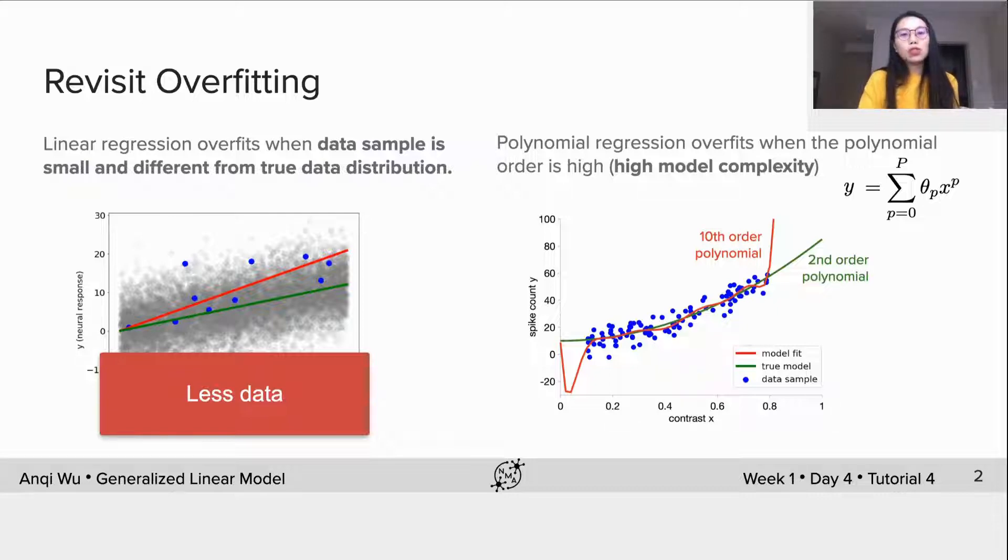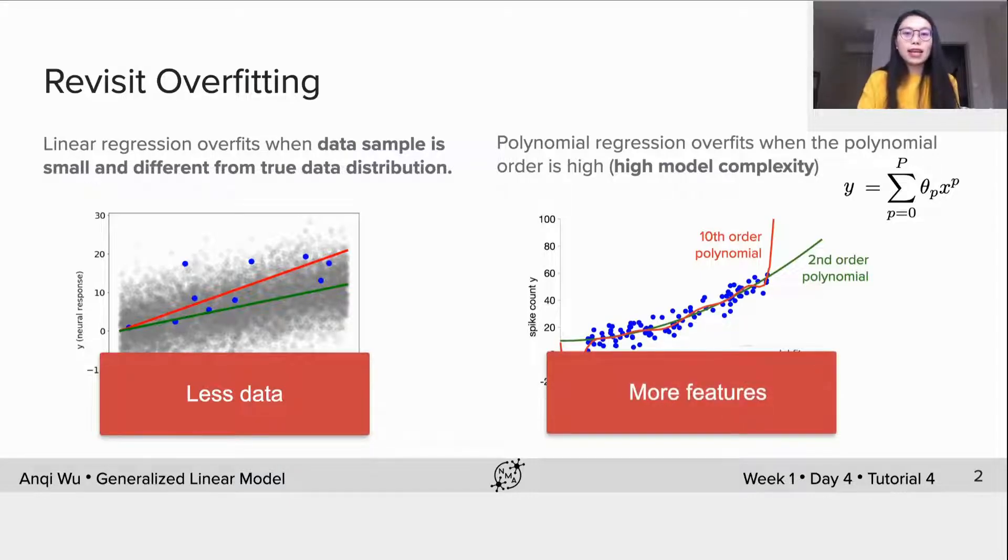For example, this true model is second-order polynomial, the data sample is large but with noise, so the tenth order polynomial tries to fit as many data points as possible, thus overfits to the data. We can summarize this situation as more features. In general, overfitting happens when we have less data and more features.